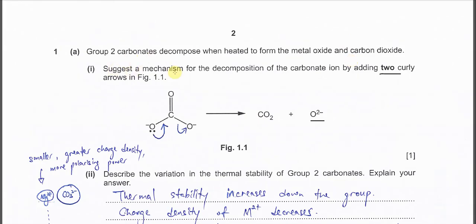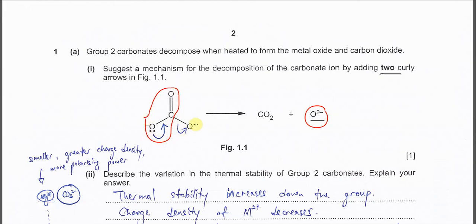Part 1 suggests a mechanism for the decomposition of the carbonate ion, so you need to add two arrows inside figure 1.1. The first arrow is from the lone pair pointing to the C-O bond, showing that it will form a double bond. The second arrow is from the C-O bond pointing to this oxygen, meaning this oxygen will gain the pair of electrons and form O2 negative. So this part becomes CO2 and this forms O2 negative.